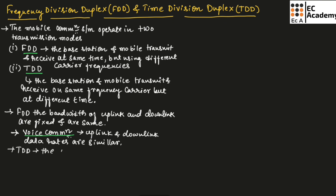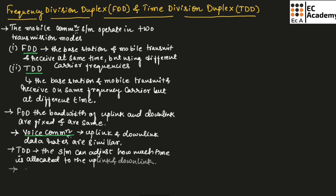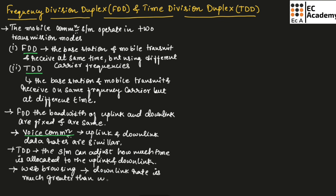In TDD, the system can adjust how much time is allocated to the uplink and downlink. Hence, time division duplex is more suitable for web browsing, in which the downlink rate is much greater than the uplink rate.